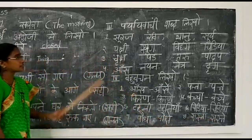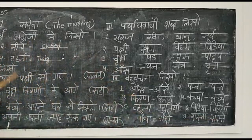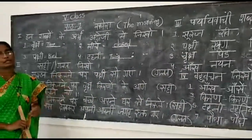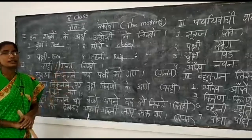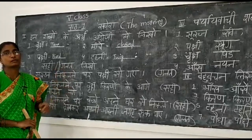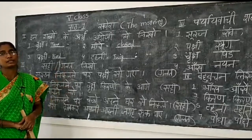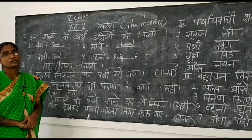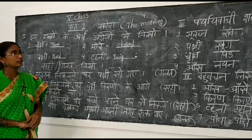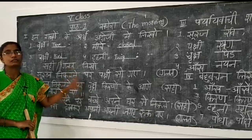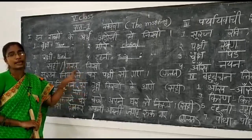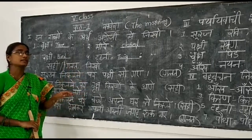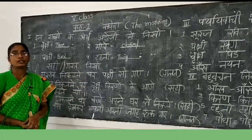So dear children, all of this is given in your workbook page number 3. See it carefully and complete it neatly in your workbook. Also practice in your rough notebook. Complete your workbook with neat handwriting and practice everything in the rough notebook. Thank you children.